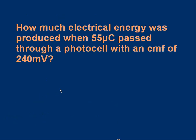Okay you can pause the video when you're ready if you want and get a pen, paper and calculator. The question is this: how much electrical energy was produced when 55 microcoulombs passed through a photocell, that's a photoelectric cell, with an EMF of 240 millivolts? So we know the charge that's passed through something, 55 microcoulombs, and we know the EMF which was 240 millivolts and the question is how much energy has been turned from light into electrical. Pause the video, pen, paper, calculator, have a go.